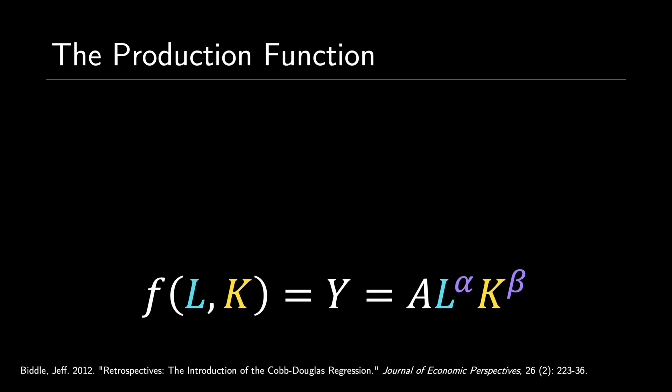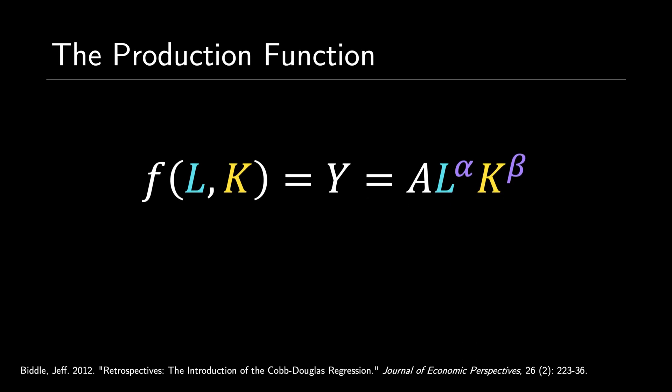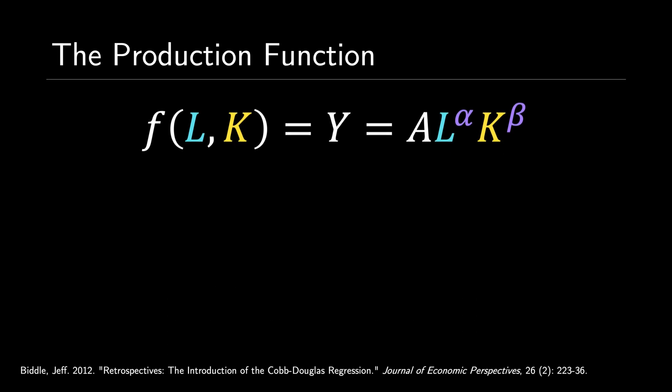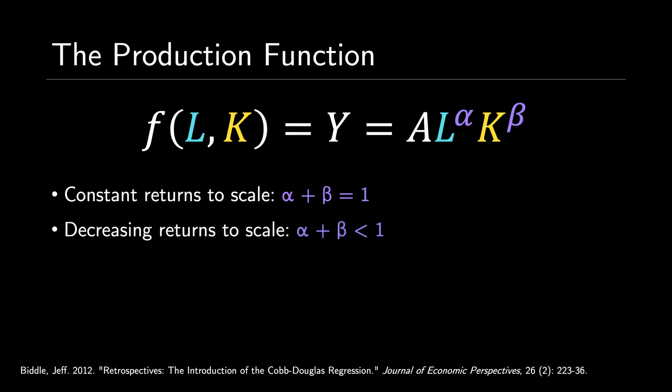There are two things to note. First, alpha and beta are both constant because they are decided by the overall market. Second, assuming constant returns to scale, alpha plus beta is equal to one. Assuming decreasing returns to scale, alpha plus beta is less than one. And finally, if there are increasing returns to scale, then alpha plus beta is greater than one.